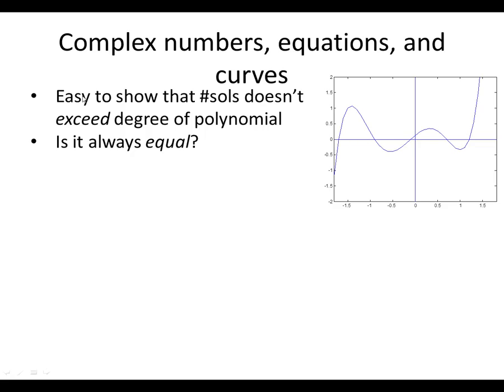It turns out it's easy to show, just purely algebraic and nothing really particularly deep, that the number of solutions doesn't exceed the degree of the polynomial, so that if it's a fifth degree, it couldn't have six or seven or eight intersections. But is it really always equal?